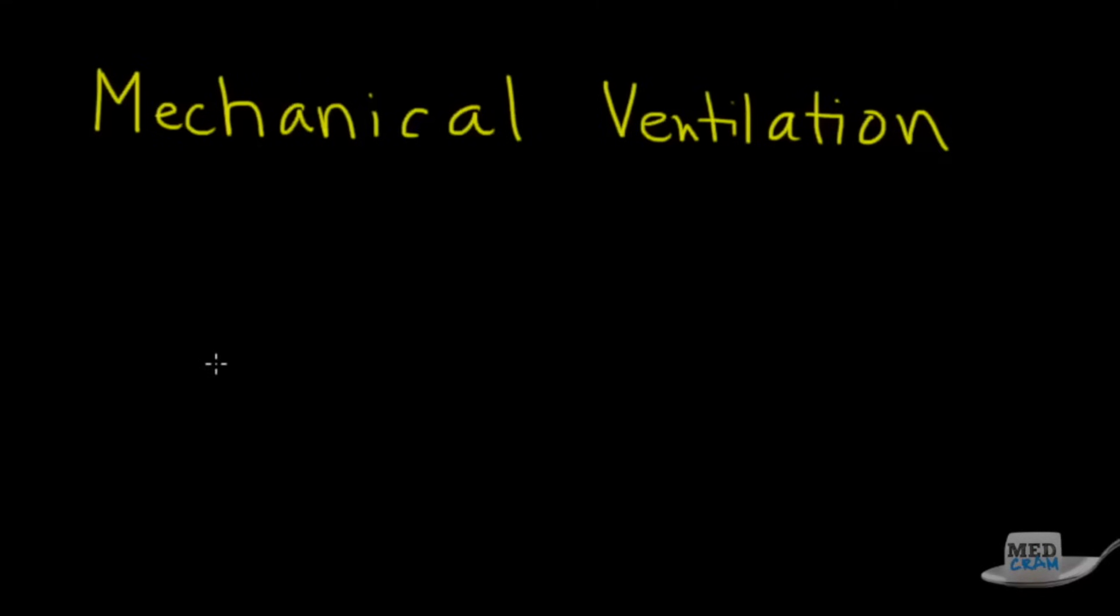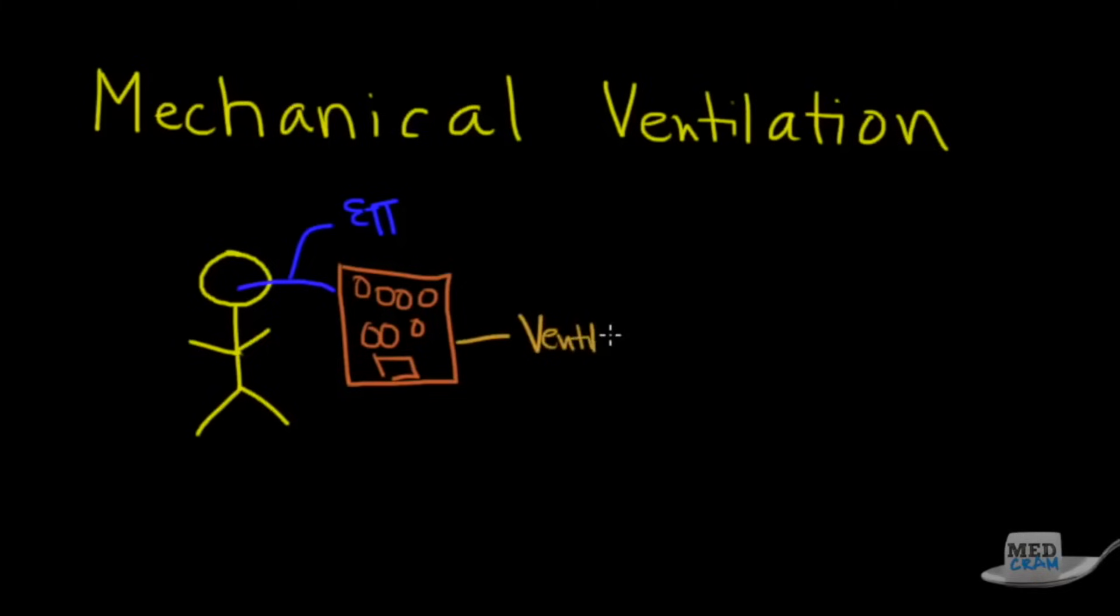The first thing you've got to know is the definition of some of these things. You've got the patient, then you've got this thing coming out of their mouth that's the endotracheal tube, and then you have it hooked up to a big machine with a bunch of knobs on it and dials and output. This is what we know as the ET tube, the endotracheal tube, and then finally you've got the actual ventilator.